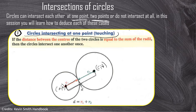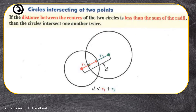Looking at the diagram, you can see that if you calculate the distance between their centers and calculate the radii, radius one plus radius two must equal that distance between the centers, which proves that they indeed intersect at only one point.